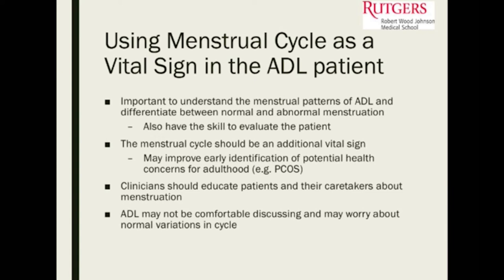As clinicians, we should be educating our patients about what's normal and what's abnormal. Sometimes patients think their cycles are not normal, but they're not keeping track properly — when you teach them how to track cycles and have them follow up, you get a better gauge of what's normal for them. Adolescents may not be comfortable discussing these things, so having an open dialogue where they feel comfortable is very useful.